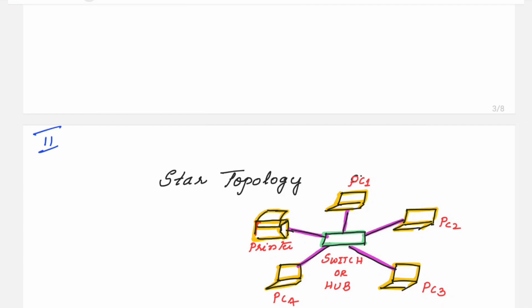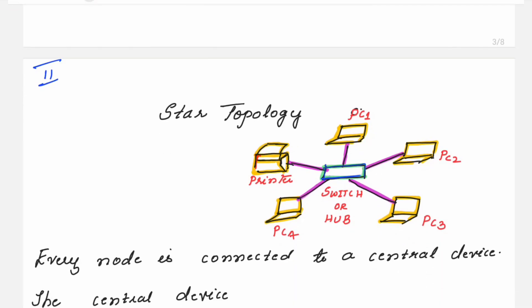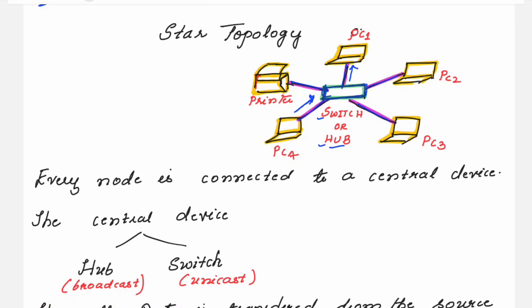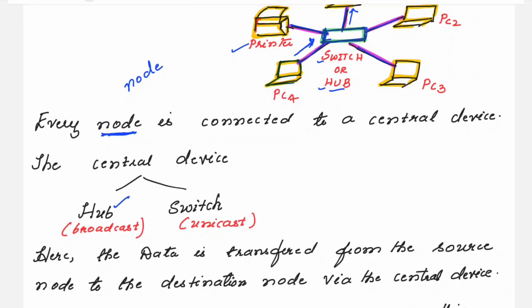The next one is star topology. In star topology, there is a connecting networking device called a switch or a hub. To this centralized device, different PCs are connected. If PC4 wants to send data to PC1, PC4 first sends the data to the switch, and the switch sends the data to PC1. Data can only be exchanged through the centralized device. These connected devices are called nodes — not just PCs, but also printers, mobile phones, and laptops. Any device connected to the centralized component becomes a node, and the central device can be a hub or a switch.